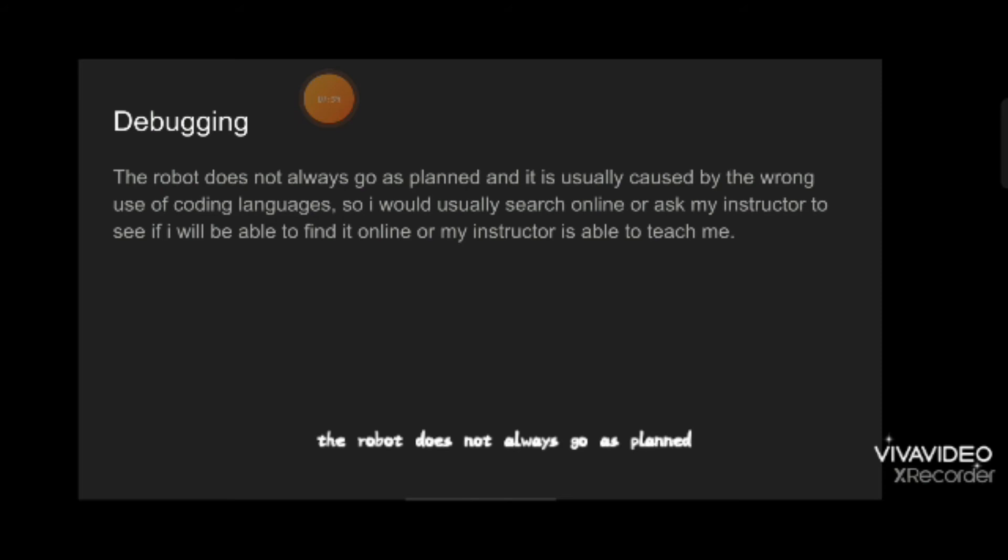The robot does not always go as planned and it is usually caused by the wrong use of coding languages. So I would usually search online or ask my instructor to see if I will be able to find it online or how my instructor is able to teach me.